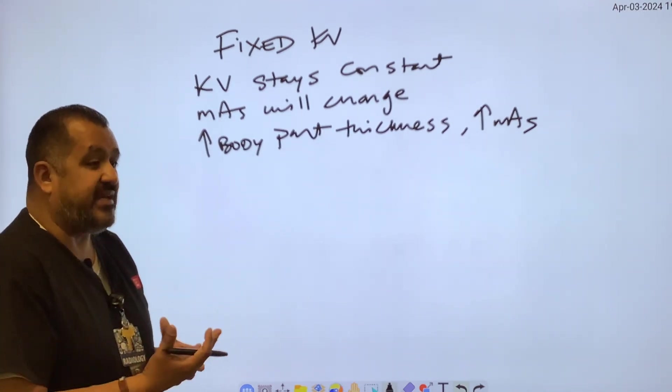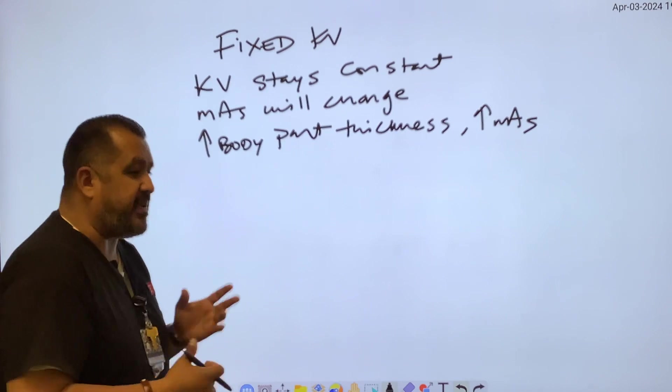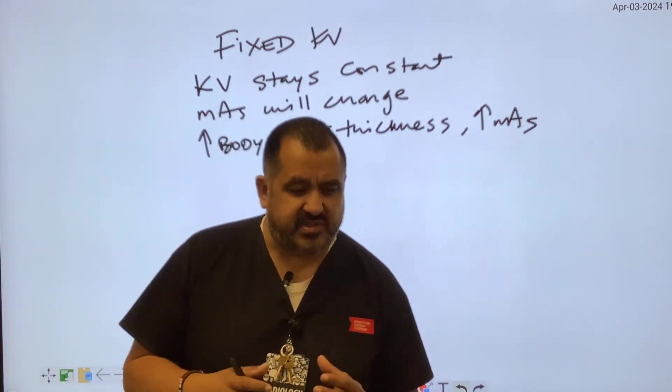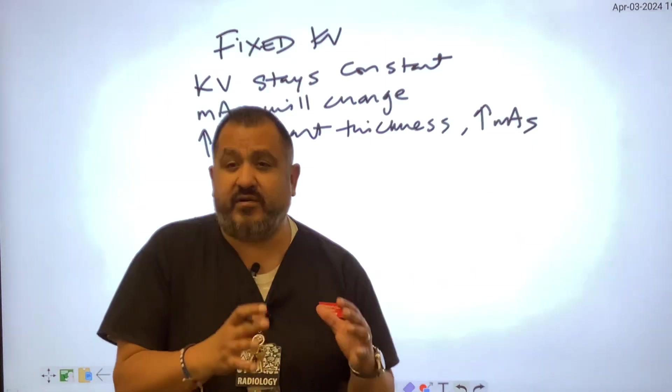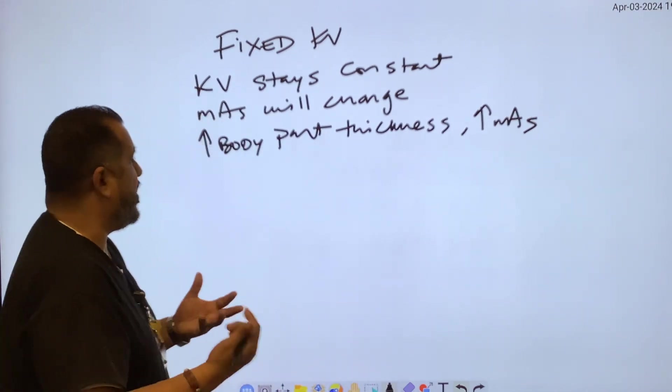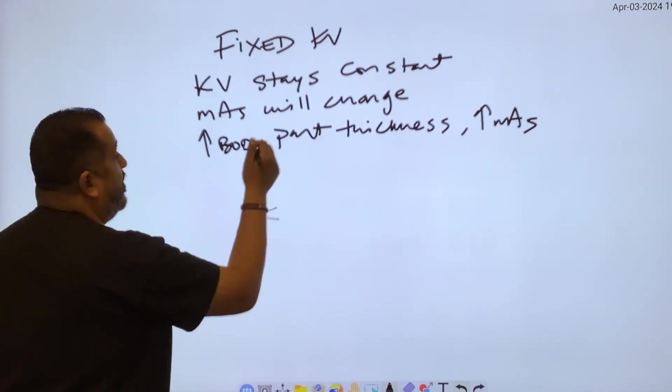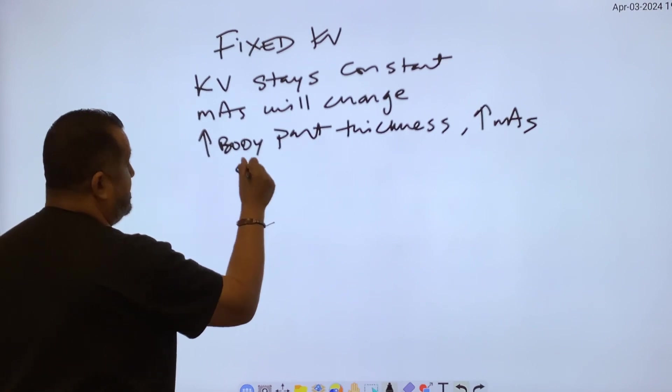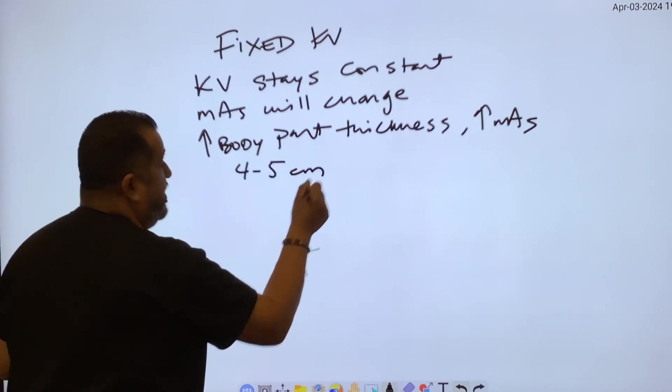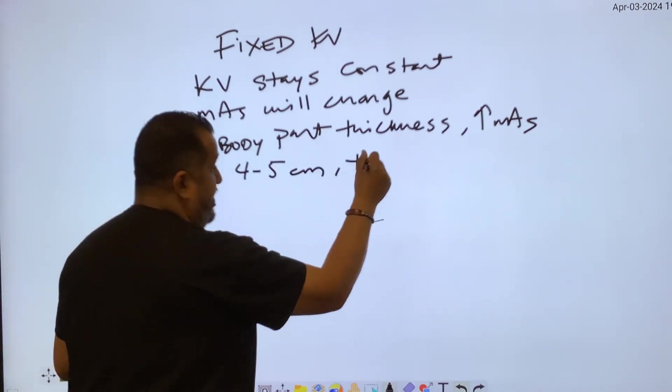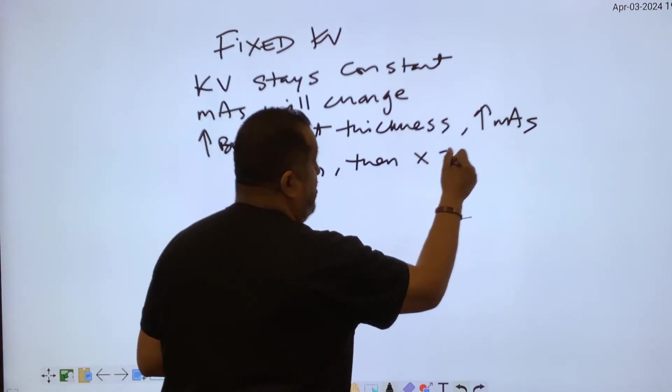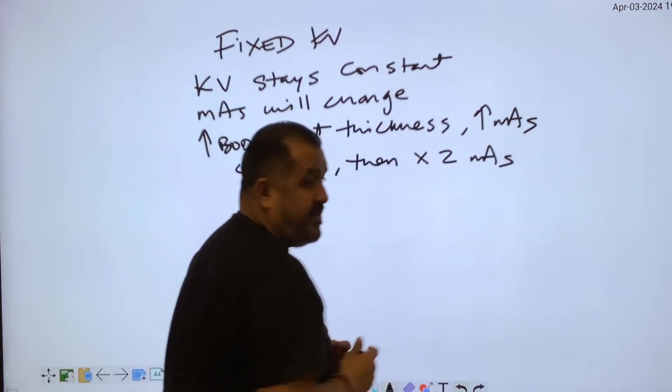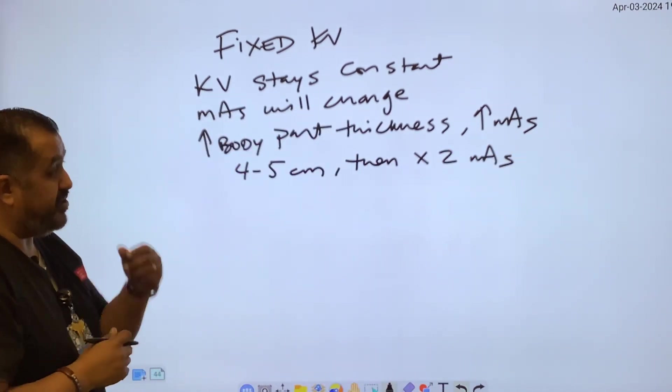So there's a rule that tells exactly by how much. The measurement is going to be four to five centimeters, depending on what books you read. Some books will say just five centimeters, some will say four to five centimeters. I'll use the range for today's explanation. So if you go up four to five centimeters in body part thickness, then you have to double your mAs.